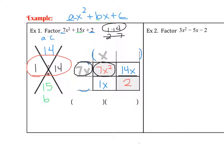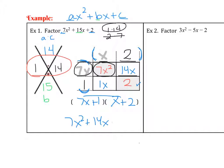Now that we have 7x times x filled out: 7x times what will get us 14x? So 7x times 2 will get us 14x. Then x times what equals 1x? So x times 1. The last thing you do is check that last box: 1 times 2, does that equal 2? Yes, it does. So it is factored correctly. These are the factors of 7x squared plus 15x plus 2: 7x plus 1 and x plus 2. This gives 7x squared plus 14x plus x plus 2, which is definitely 7x squared plus 15x plus 2 — our original.